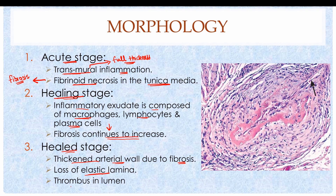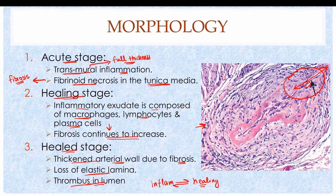Occasionally there may be thrombus in the lumen. In the histological image, the affected region shows inflammatory cells, excessive fibrosis, and near-transmural damage. Notably, the acute and healed stages can be present simultaneously in the same arterial biopsy segment, indicating ongoing cycles of inflammation and healing.